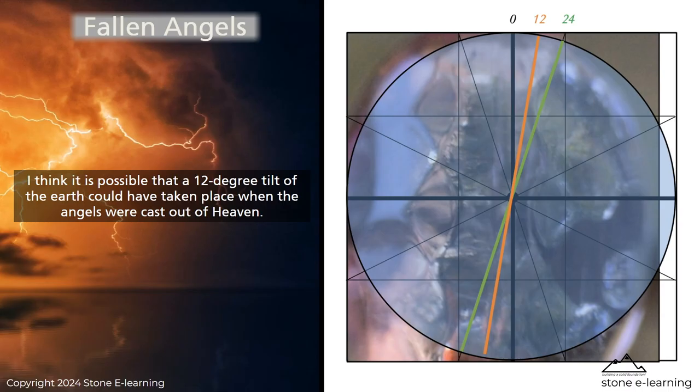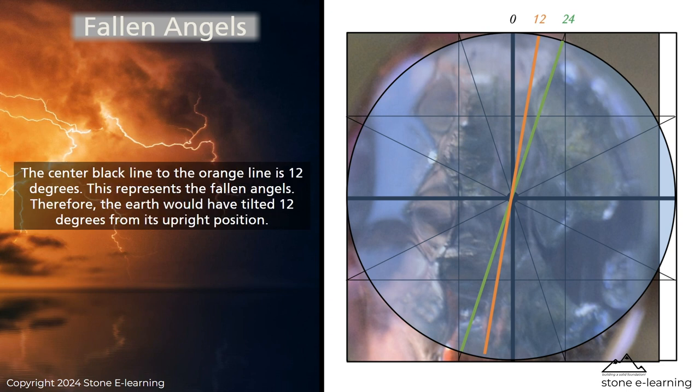It is possible that a twelve-degree tilt of the earth could have taken place when the angels were cast out of heaven. The center black line to the orange line is twelve degrees, representing the fallen angels. Therefore, the earth would have tilted twelve degrees from its upright position.